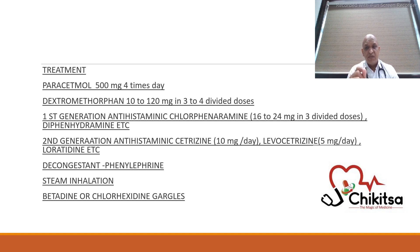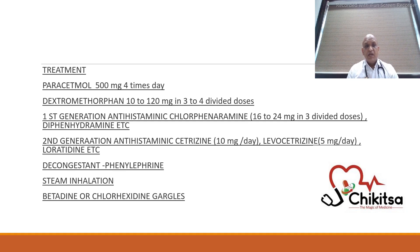You can add a decongestant, which is very good. Steam is a very good decongestant — it can be used with local application of Vicks or balm and will act as a good decongestant. Betadine gargles or chlorhexidine gargles can also work because they have antiviral and antibacterial properties. So if congestion is more, add decongestant and antihistamines; to suppress cough give dextromethorphan; add steam and betadine gargles; and if there is fever, cover with paracetamol.